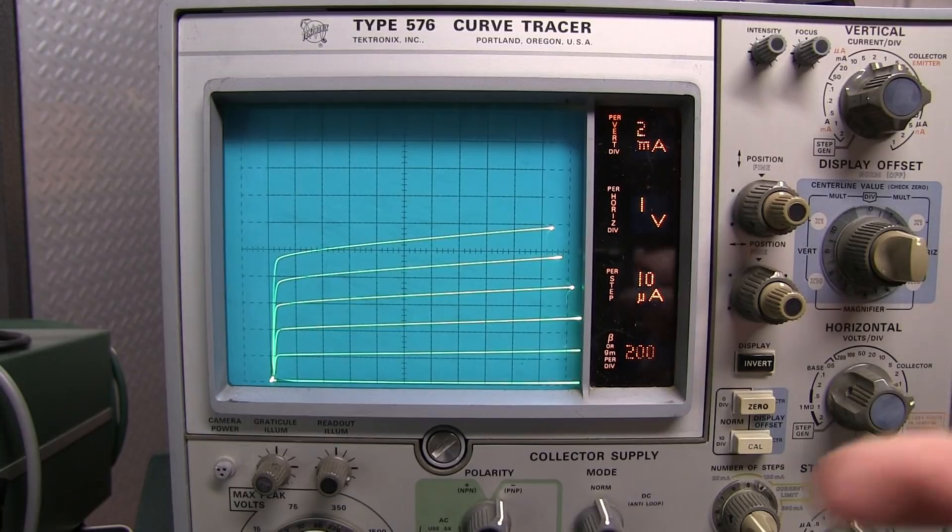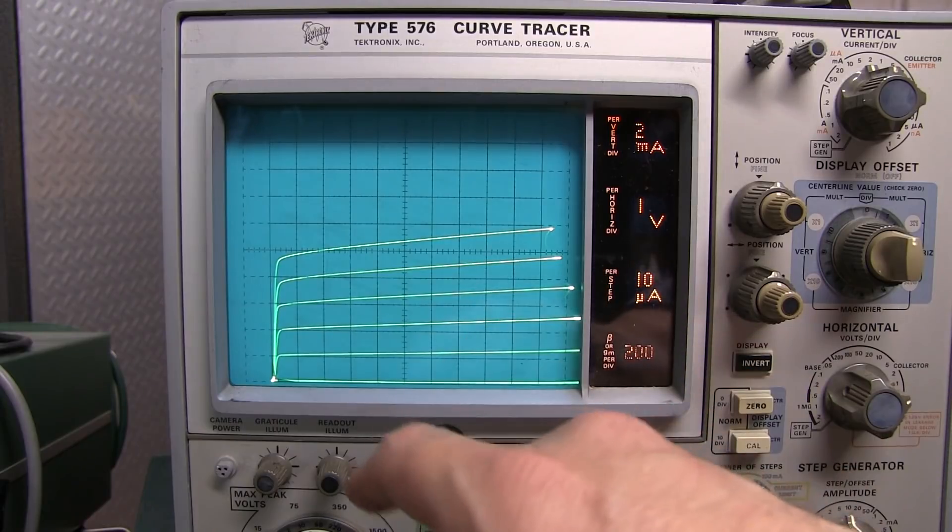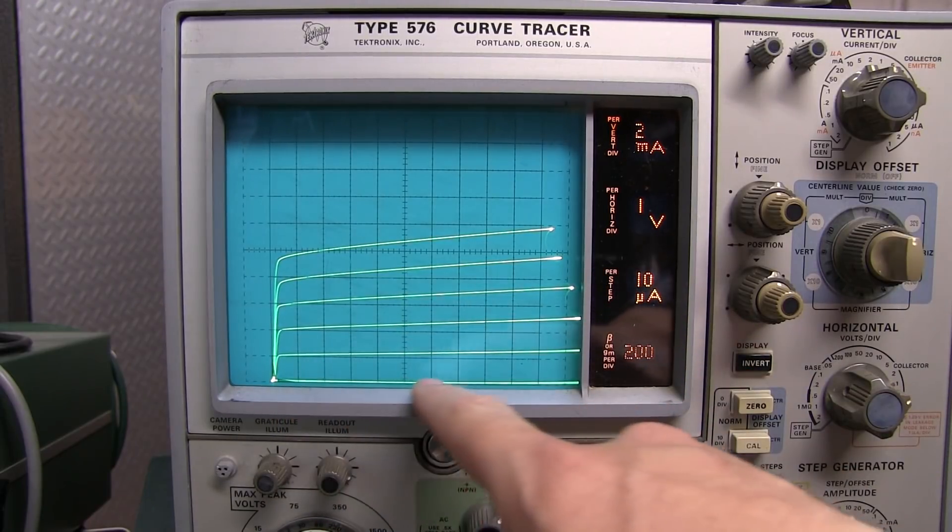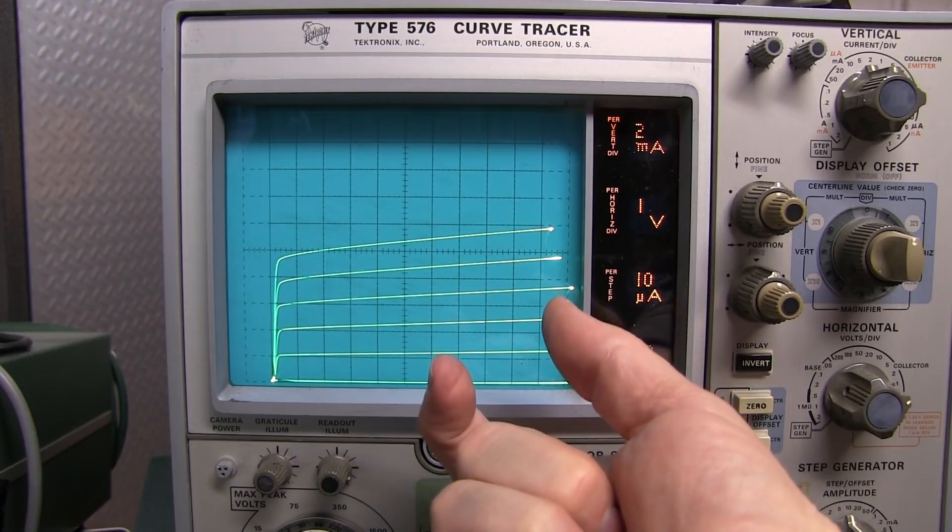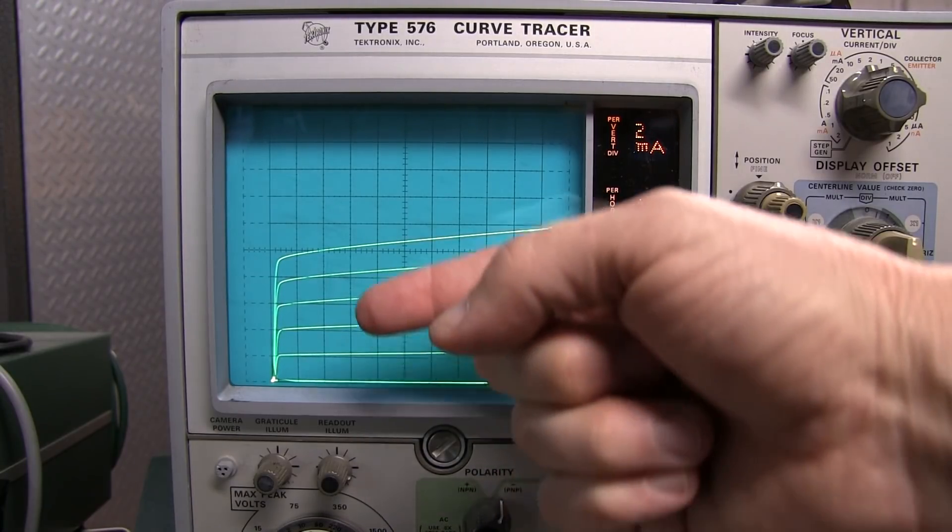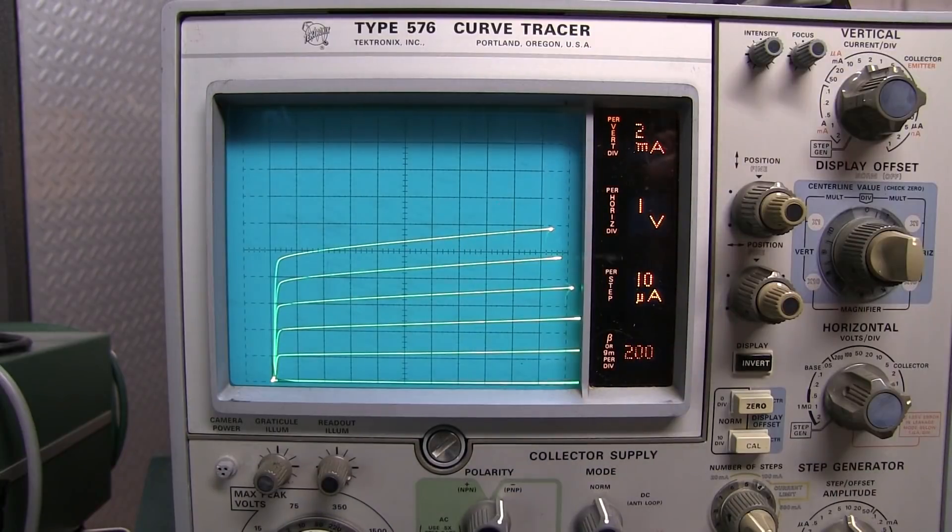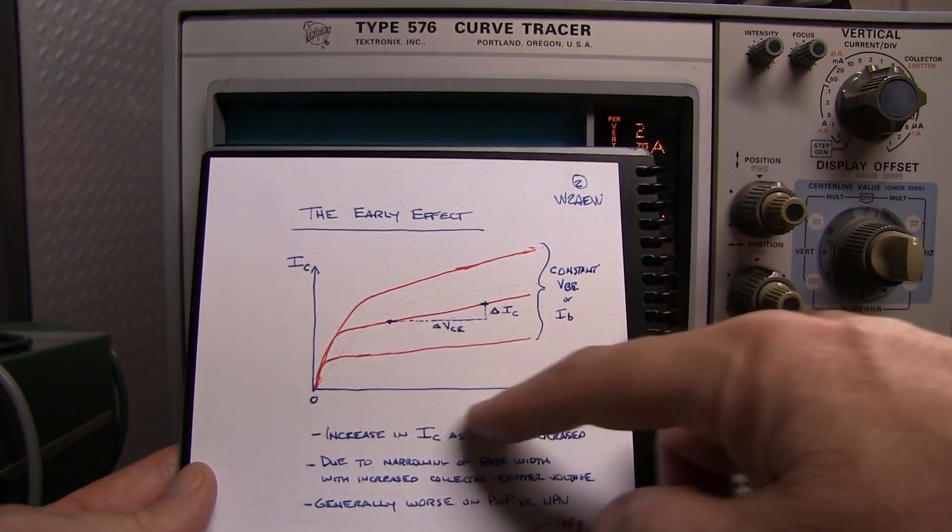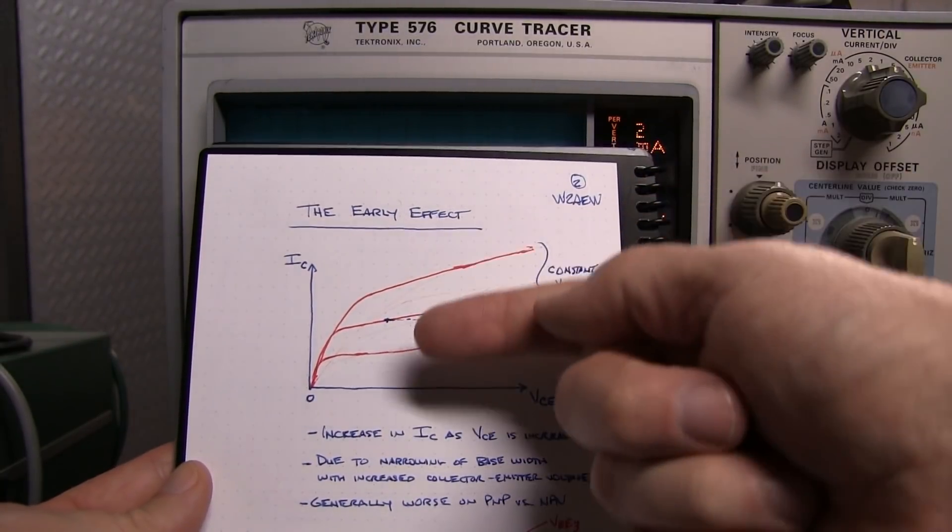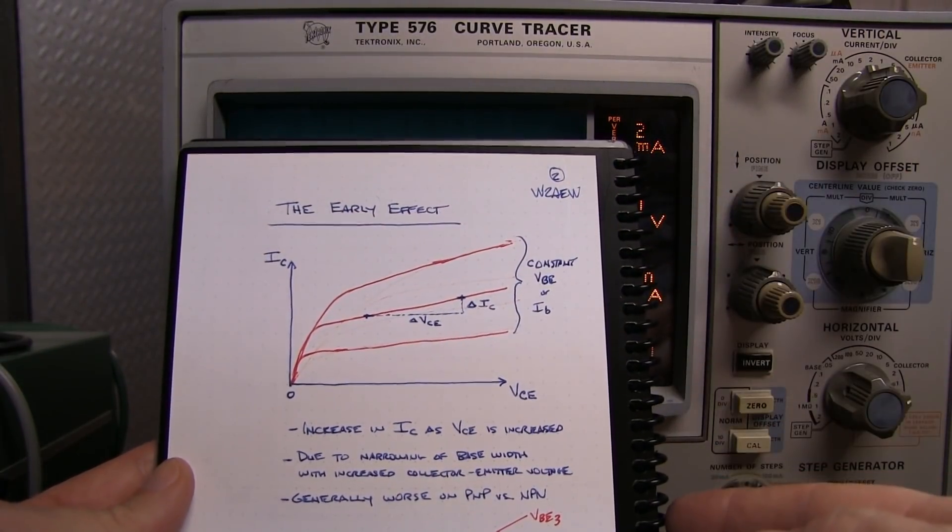This effect is mostly due to something called the early effect. The early effect basically says that as the collector to emitter voltage increases, that effectively reduces the base width in the transistor, which changes the amount of collector current that you get. So in effect, the slope of this line, which is voltage versus current, is in effect measuring the output impedance of the collector.